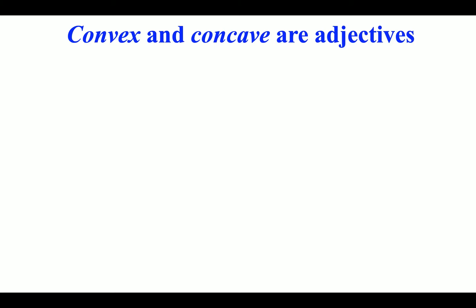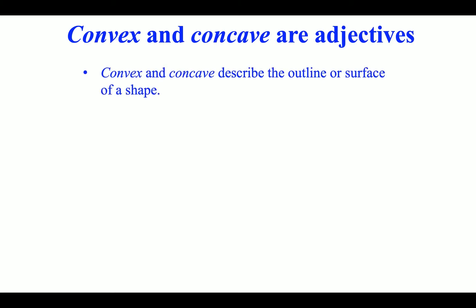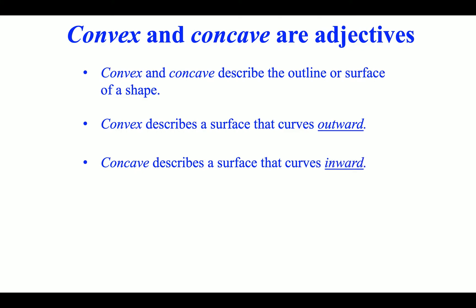Convex and concave are adjectives that describe the outline or surface of a shape. Convex describes a surface that curves outward, while concave describes a surface that curves inward.